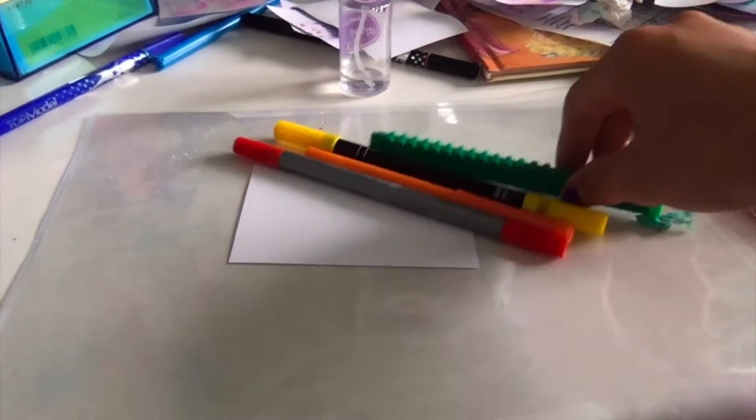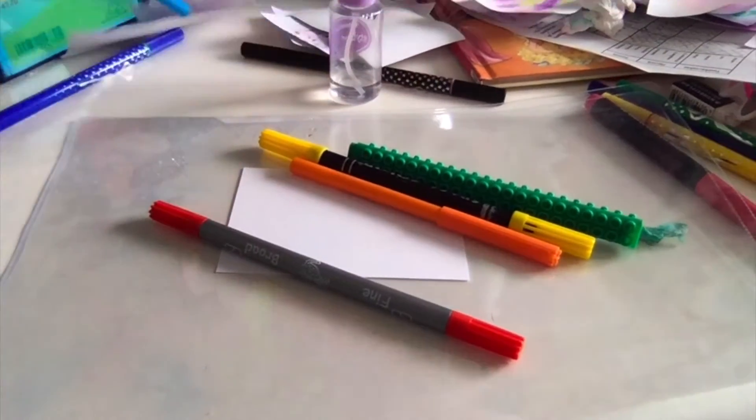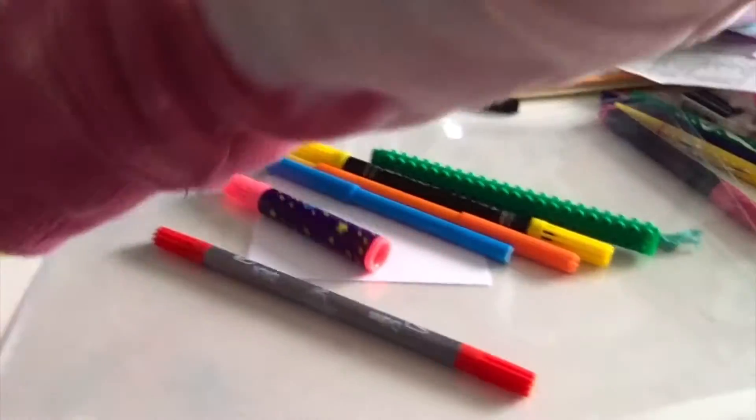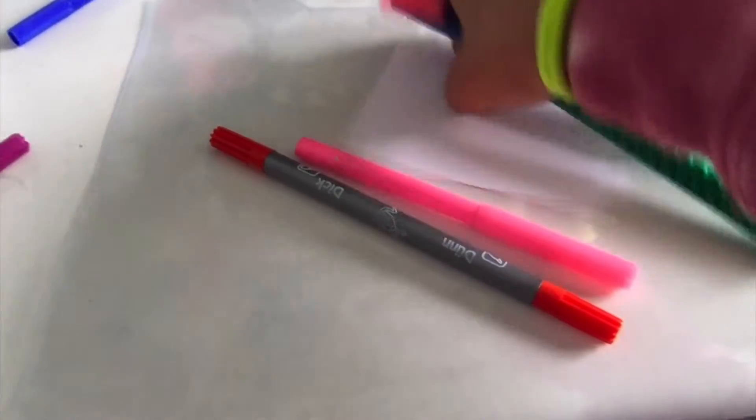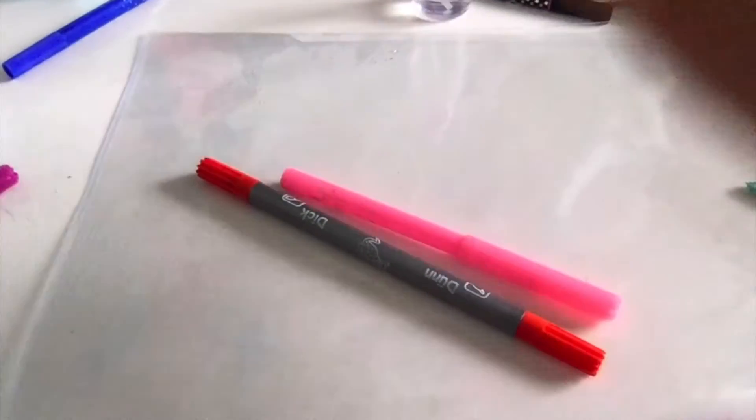going to need red, orange, yellow, green, blue, purple, and I'm going to use pink. So in order to make it, you just need your first color and you're going to take it and color on the plastic sheet. Then you're going to take your second color and color as well. So red, orange, yellow,